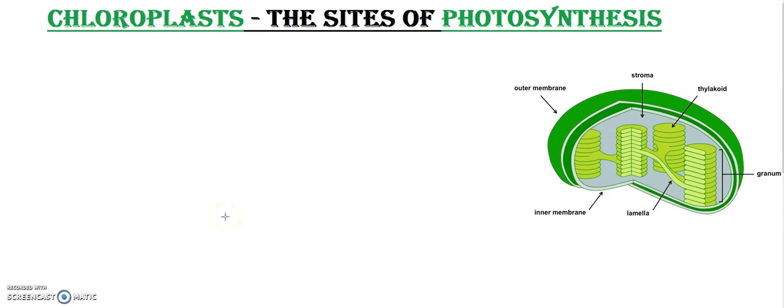Hello dear friends, today my topic of discussion is chloroplast. I am discussing this video series for class 10th students. Chloroplast is a cell organelle where the process of photosynthesis takes place. These chloroplasts are the site of photosynthesis, and what photosynthesis is we have already discussed. So now let's look at the structure of chloroplasts.